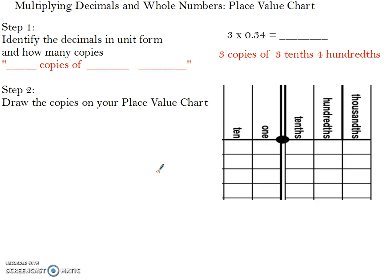Step 2 is we want to draw the copies on your place value chart. We can start with the tenths, and since I have 3 tenths, I need to draw 3 tenths 3 times. So I have 1, 2, 3, 1, 2, 3, and the third copy here.